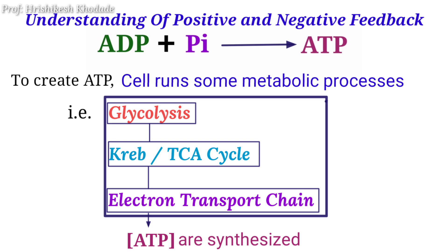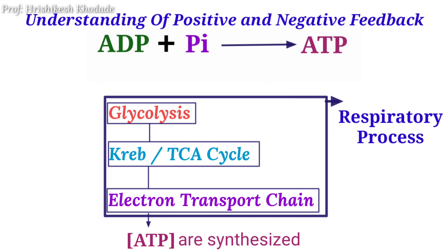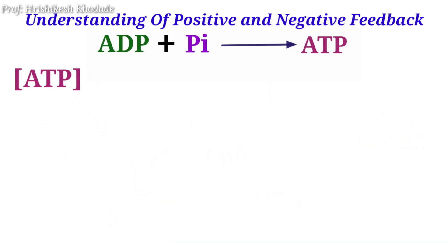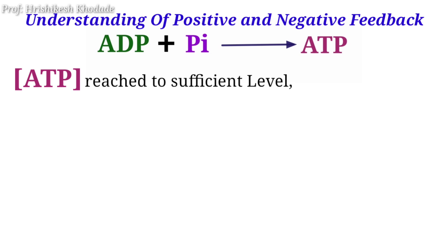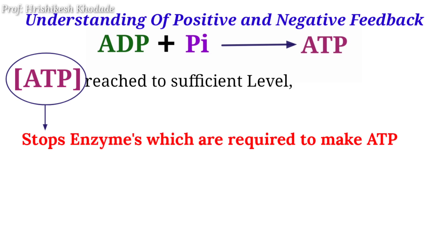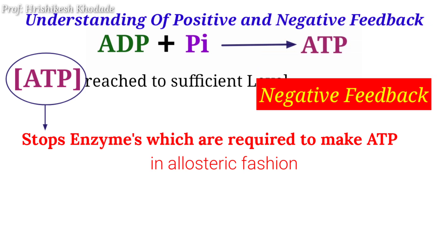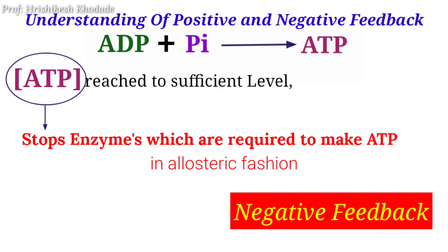All these metabolic processes required to prepare ATP come under the respiratory processes. When ATP concentration reaches a sufficient level, that ATP concentration stops — or inhibits, in an allosteric fashion — those enzymes which are involved in ATP-making processes. Here you can find the negative feedback phenomenon, which is one type of feedback mechanism.